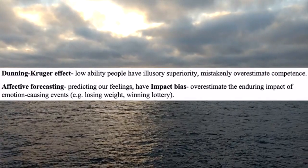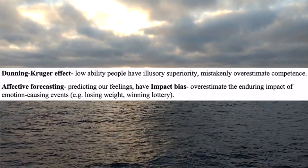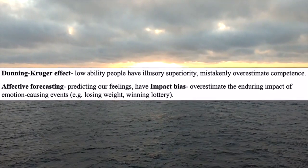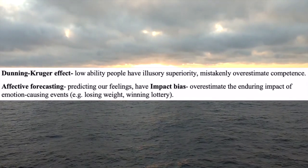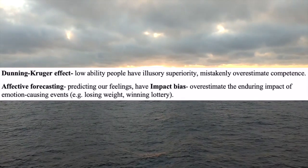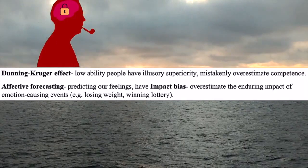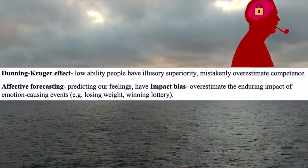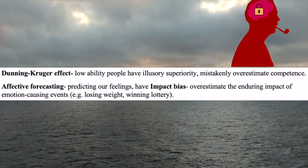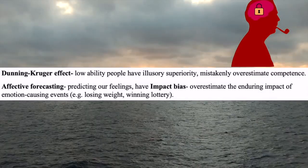Individuals may suffer from what is termed the Dunning-Kruger effect, in which people with low ability may have a sense of illusory superiority and mistakenly overestimate their competence. After all, what you do not know about what you do not know may cause people to be overconfident, since they don't really know about what they don't know.